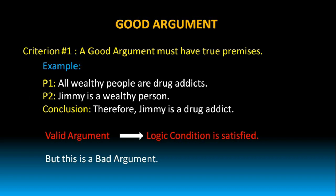Why is it a bad argument? When we look at premise 1 — all wealthy people are drug addicts — which is wrong. All wealthy people are not drug addicts. So, this premise is false. This premise led to the wrong conclusion that Jimmy is a drug addict just because he is a wealthy person. So, though this argument is valid, it is not a good argument. Good arguments must have true premises.